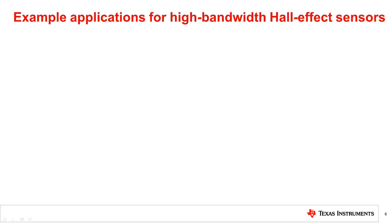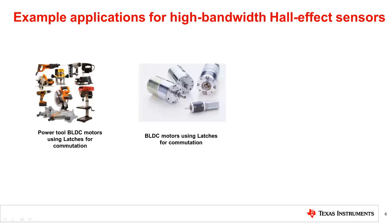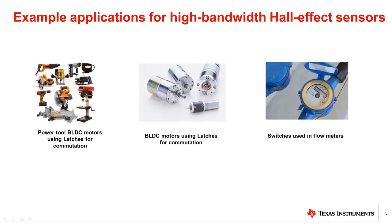And here are some examples of high-bandwidth Hall effect sensor applications: sensored BLDC motors and power tools and motors in general for motor commutation, and liquid and gas flow meters.